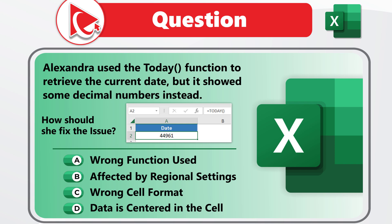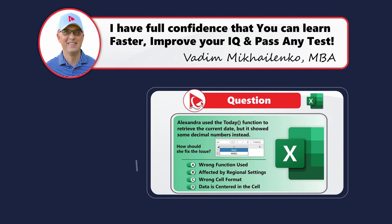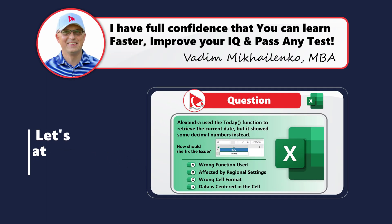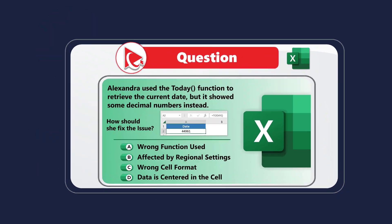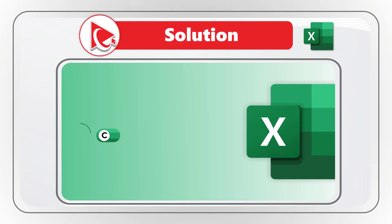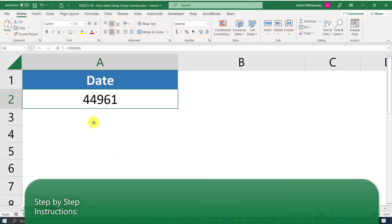Take a close look — maybe pause this video to see if you can come up with the solution. I'm moving forward to share my version of the answer, but if you have a better way to solve it or a different answer, please post in the comments. As you may have figured out, the answer is C: wrong cell format. But why? Let's jump to Microsoft Excel to see how we can solve the issue.